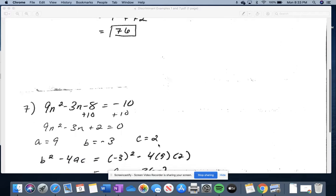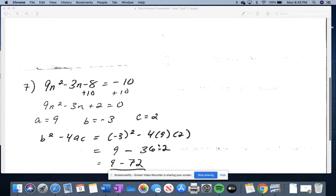I'm also going to do number 7, because it's a little different. It asks you about how many solutions this has. Another thing that's different about 7 is that it's not equal to zero, it's equal to negative 10. So we need to add 10 to both sides of this before we start anything. So once we add 10 to both sides, negative 8 plus 10 is positive 2, and then we're good to go.